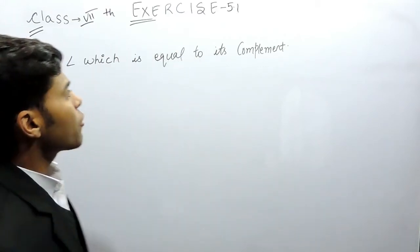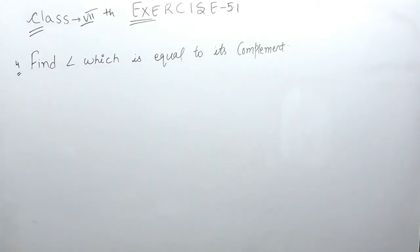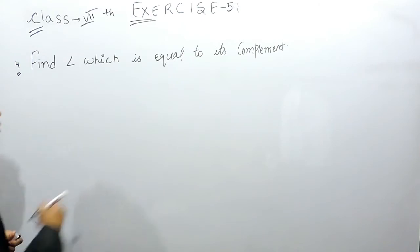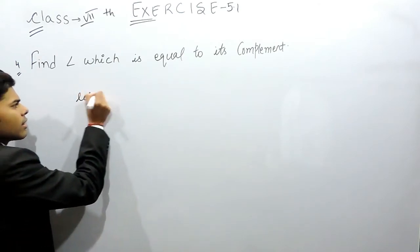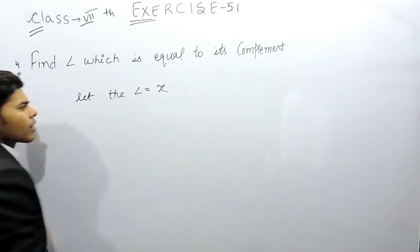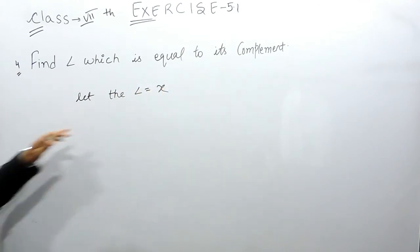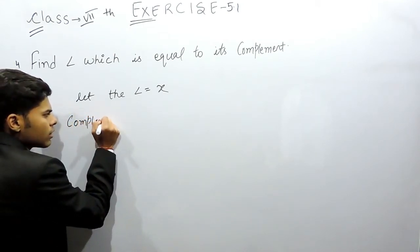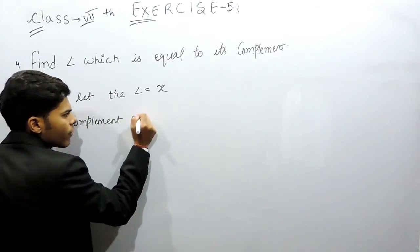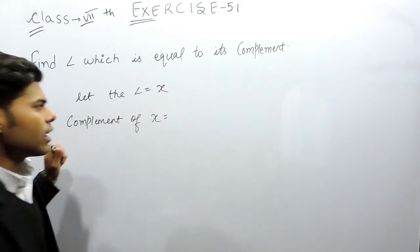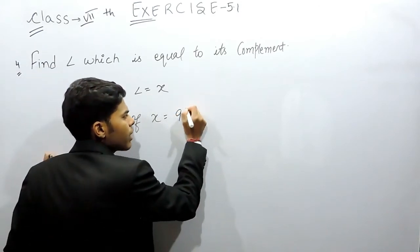Hello everyone. This is the fourth question of exercise 5.1, and the question says: find the angle which is equal to its complement. So what we will do is, let the angle be equal to x. Now the complement of this angle x will be equal to 90 minus x, since the complement is 90 minus the angle.